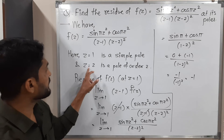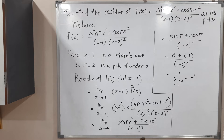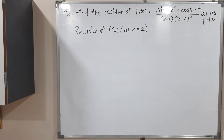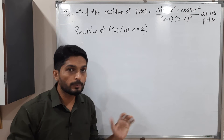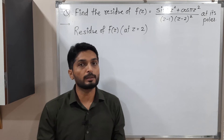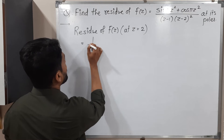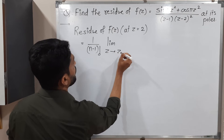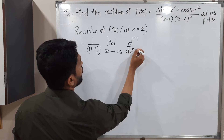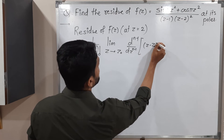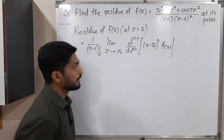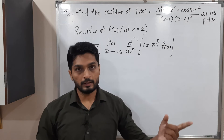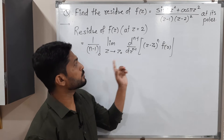Now let us find the residue of f at z=2. But z=2 is a pole of order 2, so the previous simple pole formula is not applicable. We use the general formula: (1/(n−1)!) · limit as z tends to z₀ of the (n−1)th derivative of (z−z₀)ⁿ·f(z). We use this formula when the order is greater than 1. Here the order is 2, so I am using this formula.